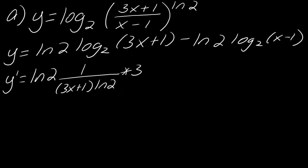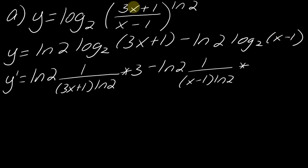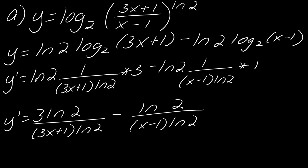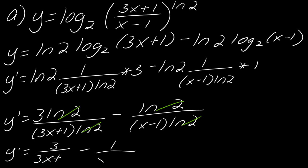We leave that as is and pivot to the next part. Writing the natural log of 2 again, now I'll work on the second term using the chain rule: 1 over (x − 1) times the natural log of 2, and then times the derivative of (x − 1), which is just 1. Simplifying, I have 3 natural log of 2 over (3x + 1) times the natural log of 2, minus natural log of 2 over (x − 1) times the natural log of 2. These natural logs of 2 cancel out, giving 3 over (3x + 1) minus 1 over (x − 1).